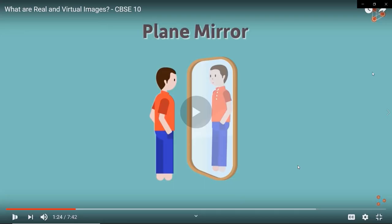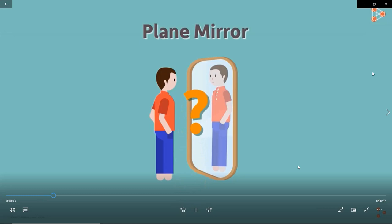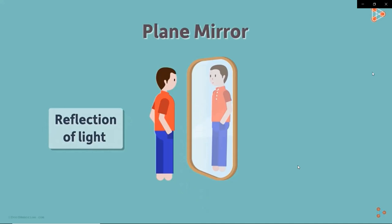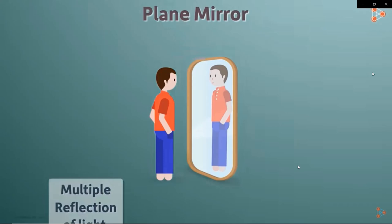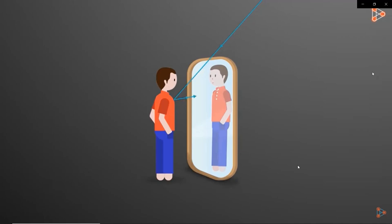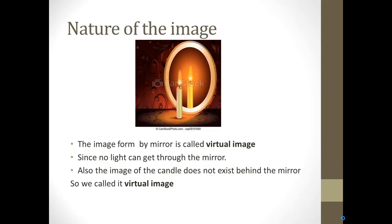Why are we able to see our image? It's due to multiple reflections of light. The light rays from the source are first incident on our body, they bounce off from our body and fall on the surface of the mirror, and get reflected from there. This reflected light then reaches our eyes and we see our image. So the Sun hits the object, the object reflects light, that reflected light hits the mirror and comes back to our eyes — it's a multiple reflection.